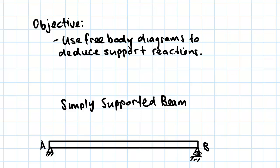It is just a beam that is supported on two sides. On one end you have a pin joint, so this here is a pin joint, and on this side we have a roller joint or a roller support.